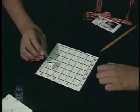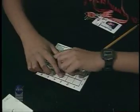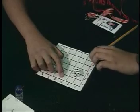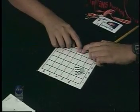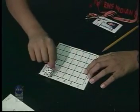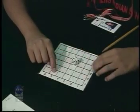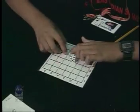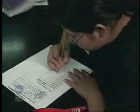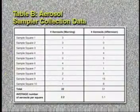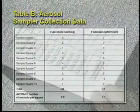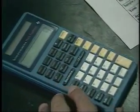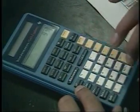Using a magnifying glass or holding the contact paper up to a light, count the number of aerosols found in each of ten randomly selected squares on the grid. Randomly select the squares by tossing the dice twice. Record the number of aerosols in each sample square on Table B, Aerosol Sampler Collection Data, on Student Data Worksheet Number 1. Add up all the aerosols in the ten randomly selected squares to get a total, then divide by ten to get an average, or mean, of the aerosols per square.